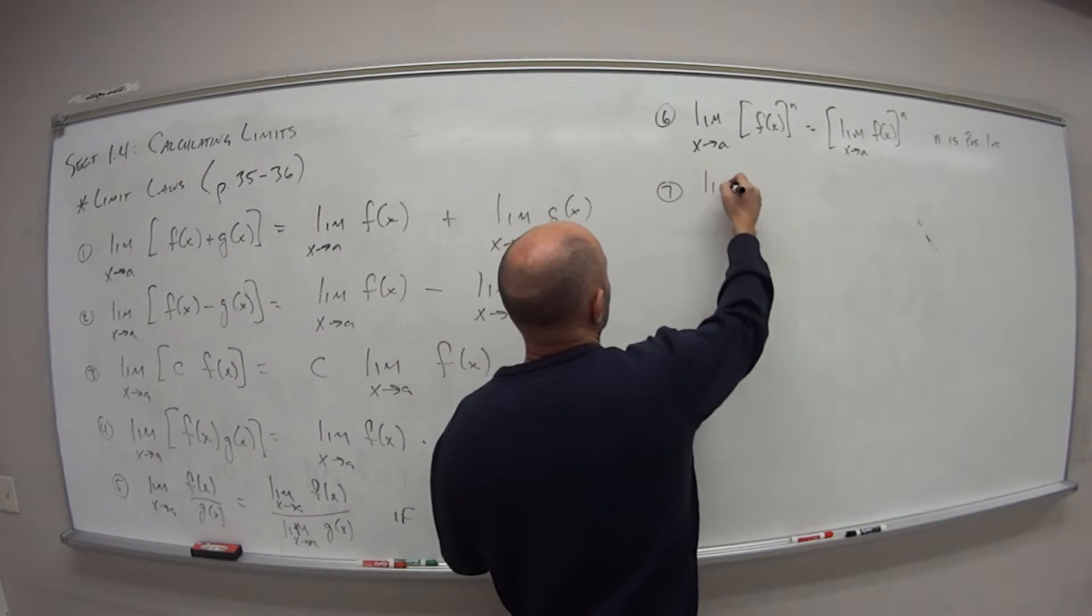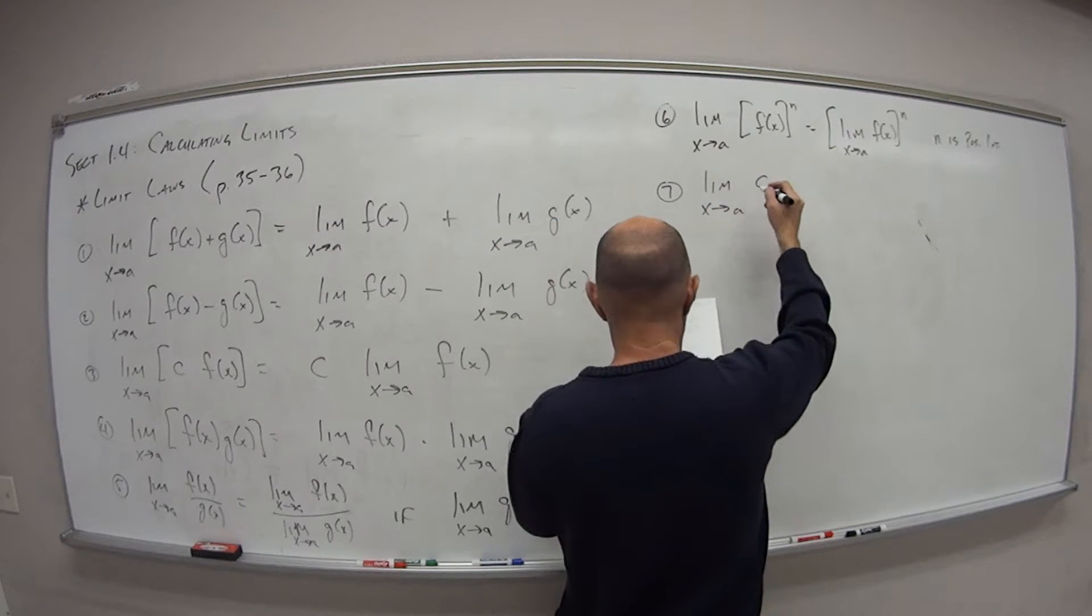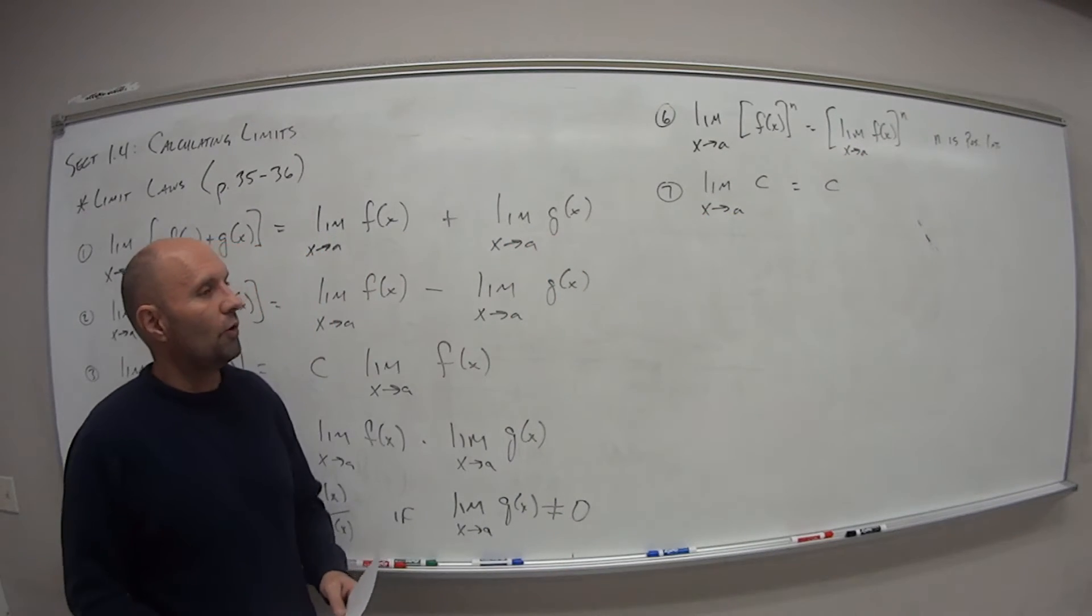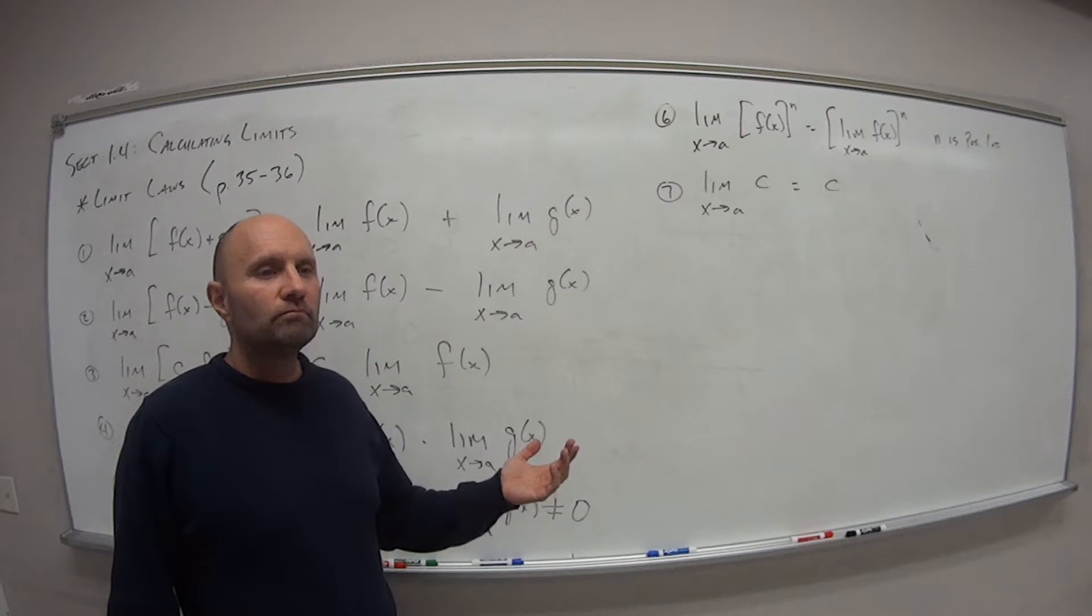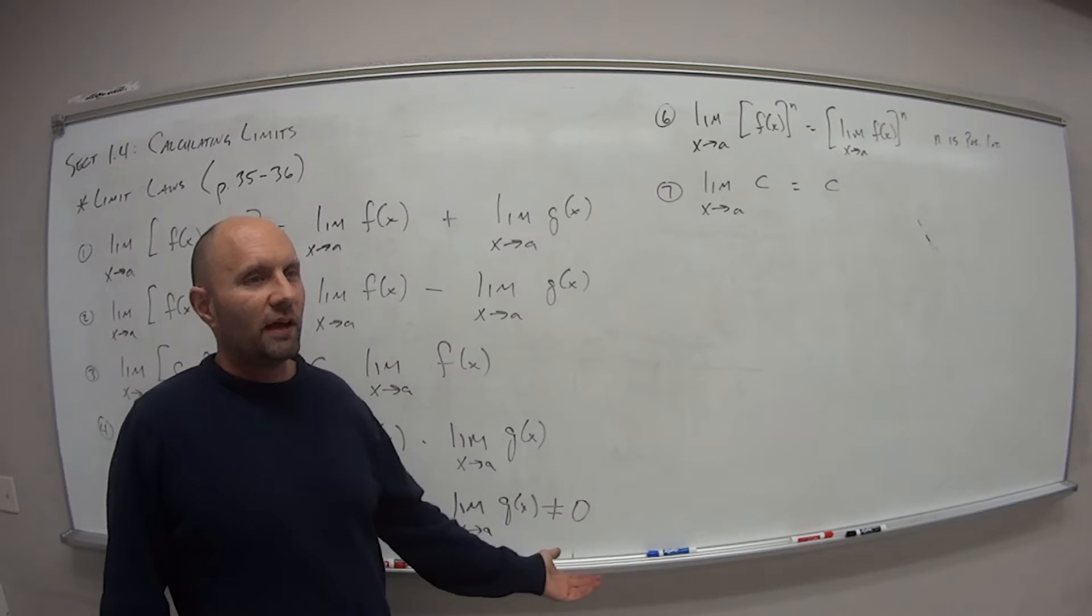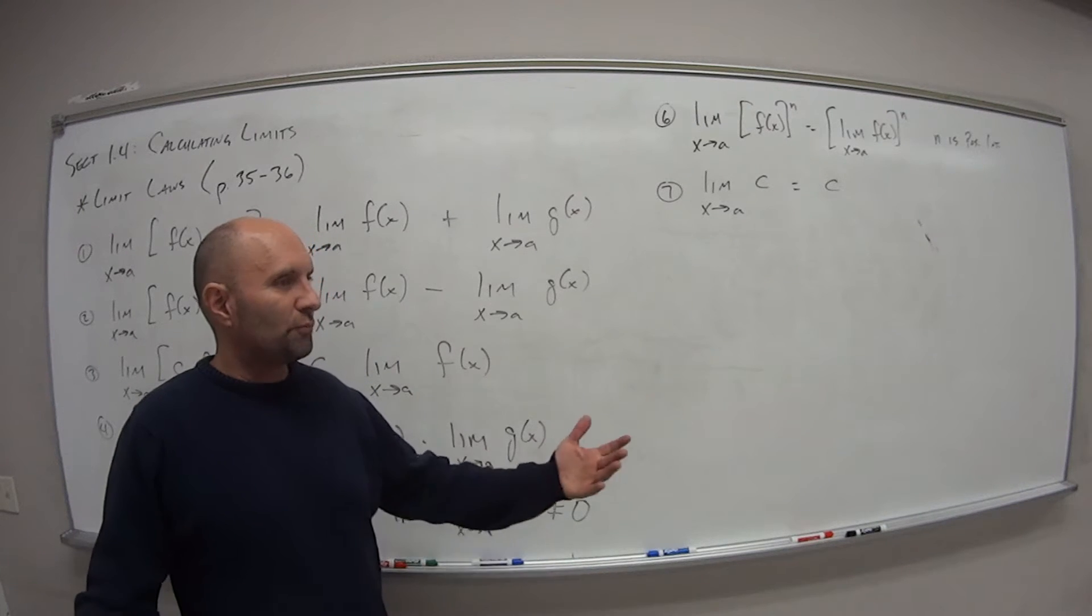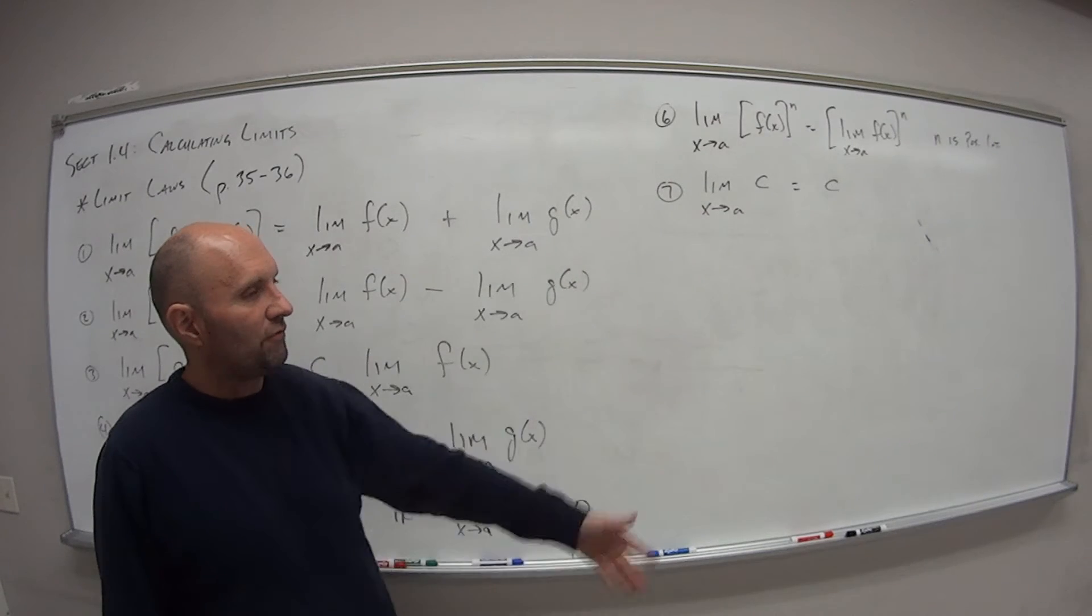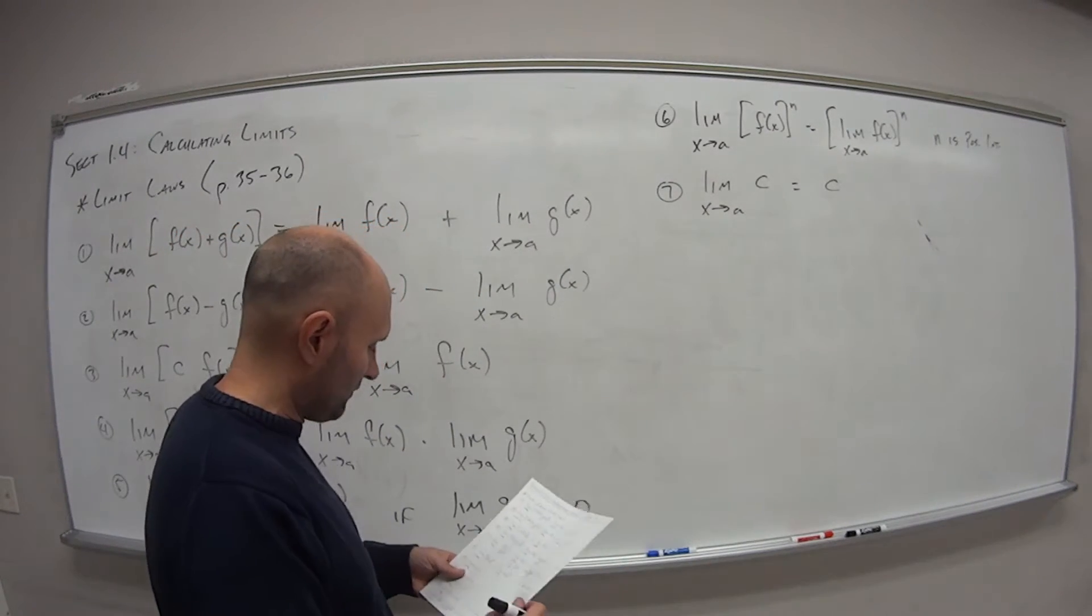The limit as x approaches a of a constant is just that value. So if f(x) equals two, as x is negative one, it's still two. As x approaches 10, my value is still two. It's always that value. So if there's no x to plug in, it's just going to give me that value back.